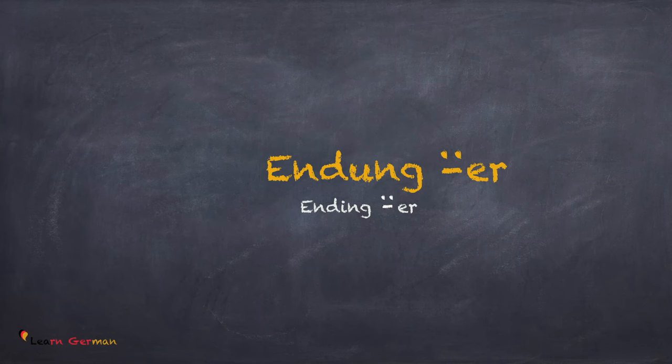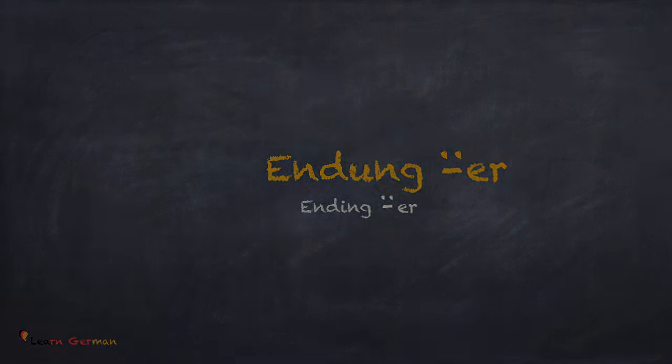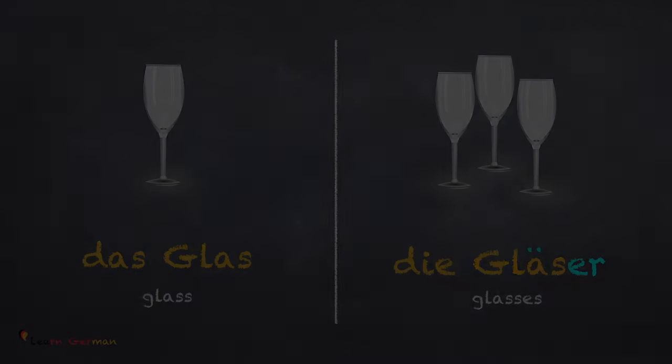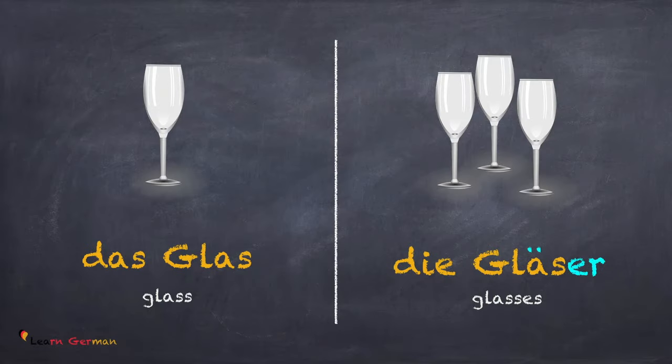Endung ER mit Umlaut. Das Haus — Die Häuser. Let's take another example: Das Glas — Die Gläser. For some words the plural is formed by adding an Umlaut to A, O, or U and ER at the end.